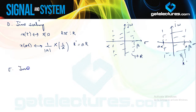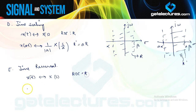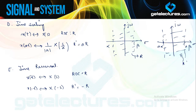Time reversal is a special case of time scaling with a=−1. So x(−t) has Laplace X(−s), since |−1|=1. The ROC reverses to become −R: the original boundaries α and β swap sides, reflecting both the σ and ω axes in the s-plane.